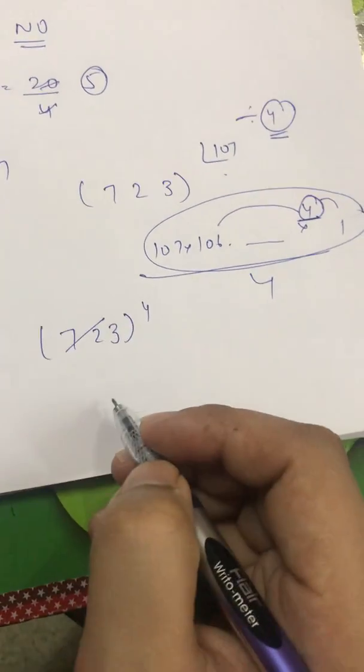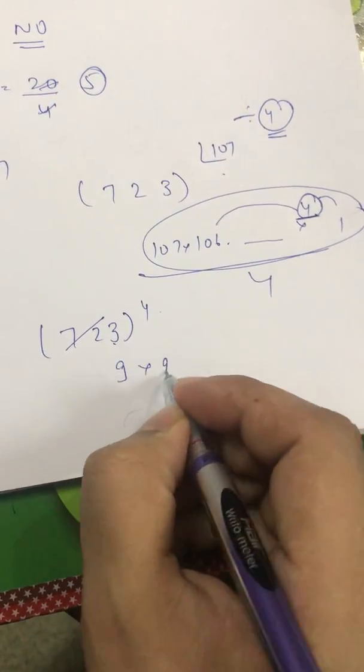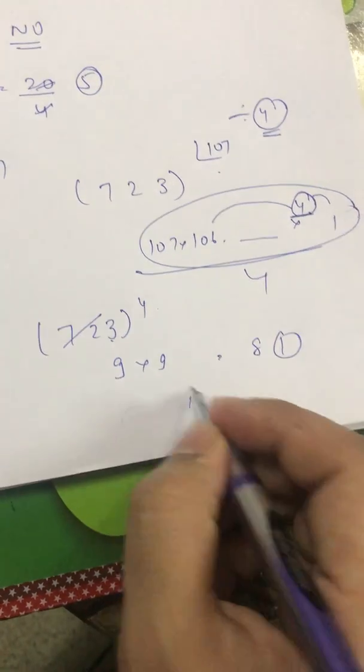So just leave this. 3 raised to the power of 4 means 9 into 9 that is 81 so unit digit will be 1 that leads to my answer.